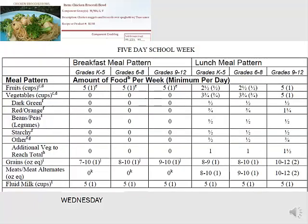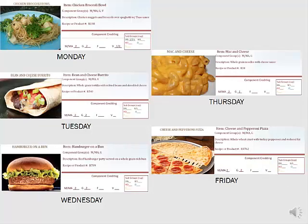A quick look at our component cards will show us if we're meeting our minimum crediting requirements. We're working on a five-day week, so we'll look at the five-day week meal pattern and focus on grains and meat-meat alternate components. The minimum daily requirements for the K-5 age grade group for both grains and meat-meat alternate is one ounce equivalent, while the minimum weekly requirements for both components is eight ounce equivalents. A look back at our component cards shows us that we have met the daily and weekly minimums for our choices.